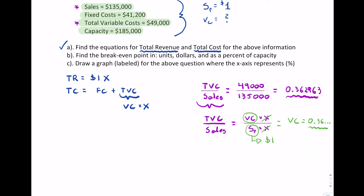Now we have our variable cost, so total cost equals fixed costs plus zero point three six two nine six three times x. We now have both our total revenue and total cost functions.